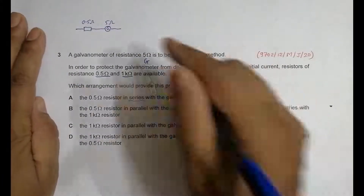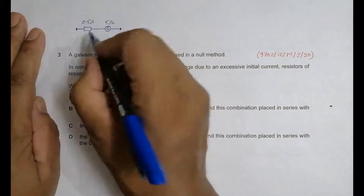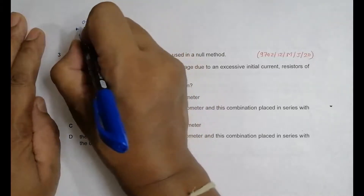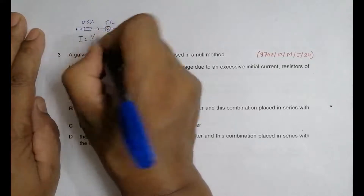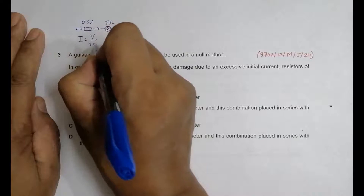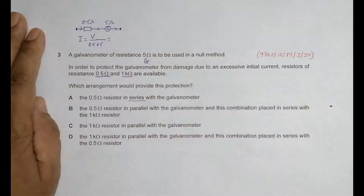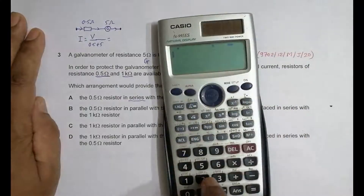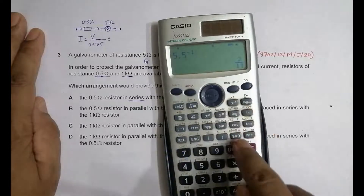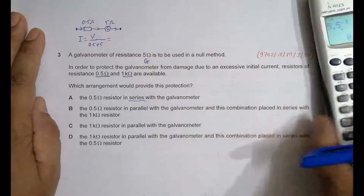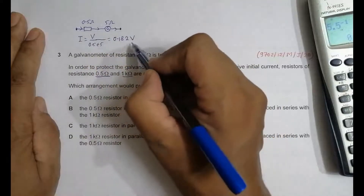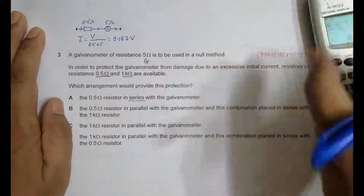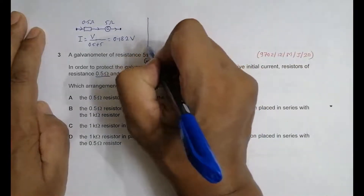We assume an arbitrary potential difference V. Since the resistors are in series, the same current flows through all of them. The current equals V divided by (0.5 + 5) = V / 5.5, which equals 0.182V numerically. So for choice A, the current through the galvanometer is 0.182V.